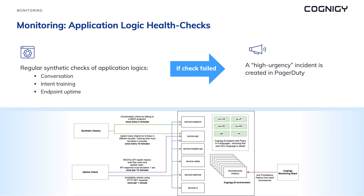To check system health when there are no conversations going on, we have implemented an automated framework that performs regular synthetic checks to identify any issues with application logic. Synthetic monitoring simulates user behavior, ensuring our environments function properly even in the absence of traffic. For example, our system generates synthetic checks at regular intervals for conversations and intent trainings using natural language processing, verifying that conversational flow and intent recognition are working as expected. If a check fails, our system immediately creates high urgency incidents and notifies an on-call engineer.